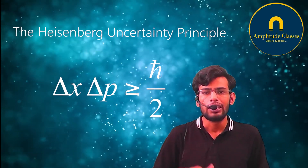Basically, you cannot measure position and momentum with infinite accuracy simultaneously. The mathematical relation remains the same: Δx · Δpx ≥ ℏ/2.